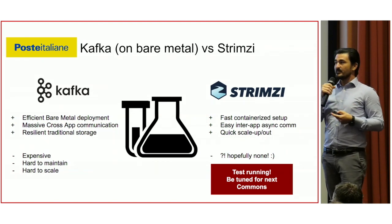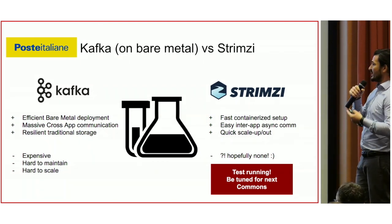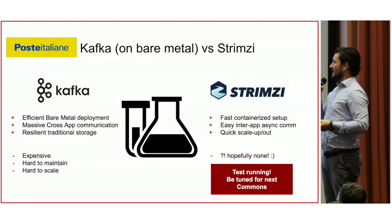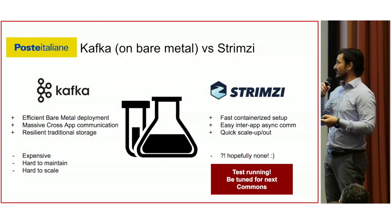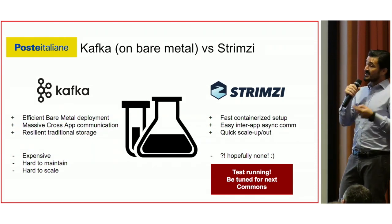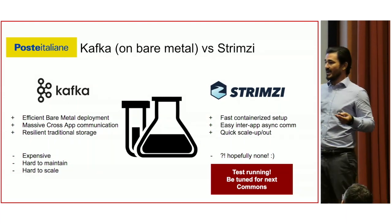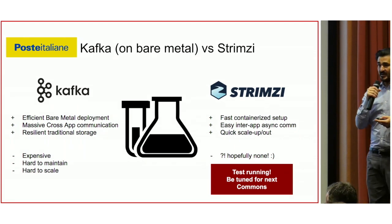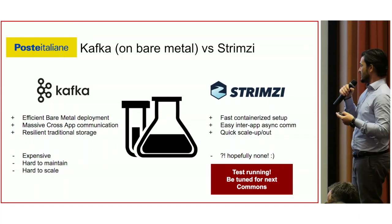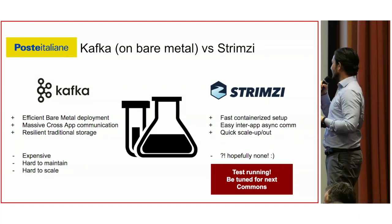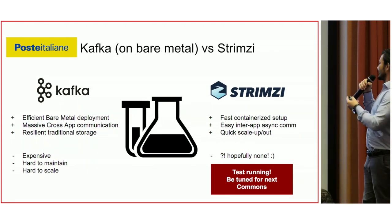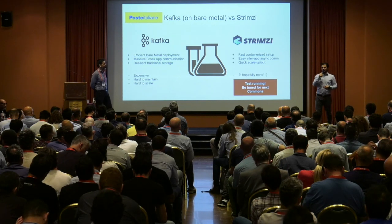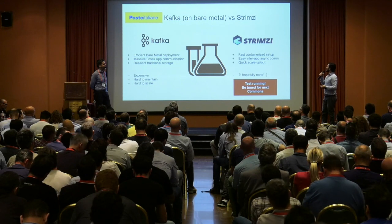How does this intersect with Strimzi? We use Kafka in bare metal and VMware deployments — it's very efficient and can absorb massive cross-system communication, and it's very resilient, but it's expensive to scale up and scale out. We are currently running tests with Strimzi to evaluate it for intra-app asynchronous communication use cases, hoping to achieve easier scale-out and scale-up. Tests are currently running and we hope to show you results at the next commons.